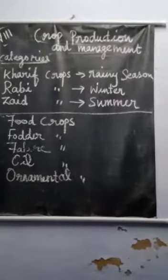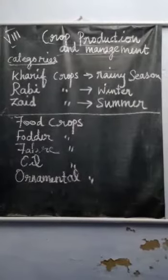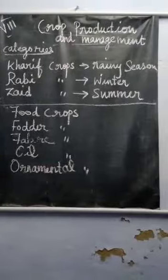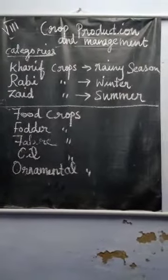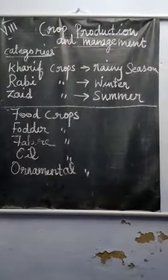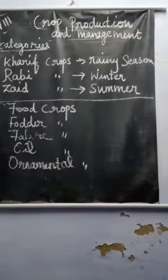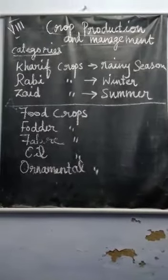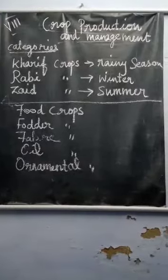Good morning children. Today we want to see the next unit: Crop Production and Management. We know that agriculture is the backbone of our country's economy. In this unit we are going to see what types of crops there are — the types of crops depend upon utility — and what are the basic practices of crop production.